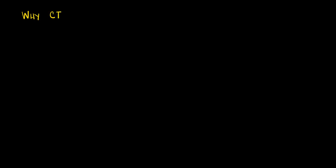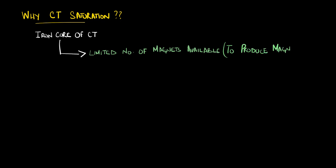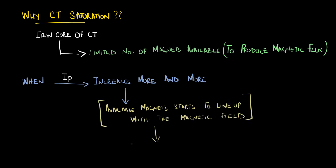Coming back to the discussion, the reason why this happens is because within the iron core of the current transformer, there are limited number of magnets available to produce the desired magnetic flux. As the primary current increases, more and more available magnets start to line up with the magnetic field. And once all of them have been lined up, that is the point at which the CT becomes saturated.